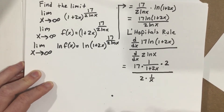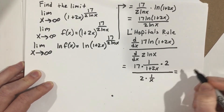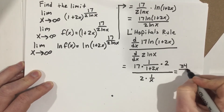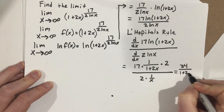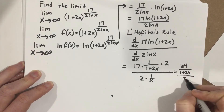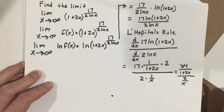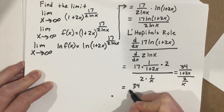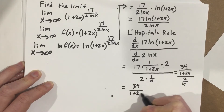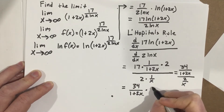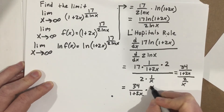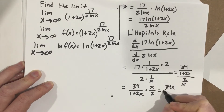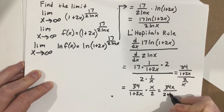Now I can start to combine some things together. This gives 34 over one plus two x, all over two over x. I'm going to flip and multiply: that gives me 34 over one plus two x times the reciprocal of two over x, which is x over two — giving 34x over two plus four x.